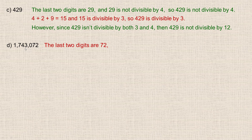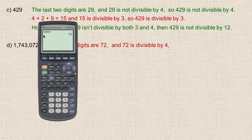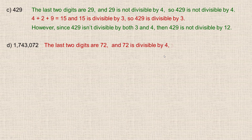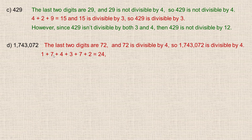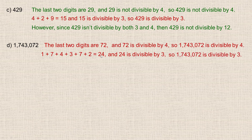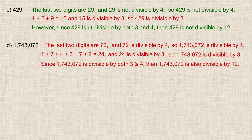Let's do one more larger example: 1,743,072. The last two digits are 72, and 72 is divisible by 4 — 18 times 4 is 72. So 1,743,072 is divisible by 4. Now let's check for 3 by adding the digits: 1 plus 7 plus 4 plus 3 plus 0 plus 7 plus 2. So 1 and 7 is 8, and 4 more makes 12, and 10 more is 22, and 2 more makes 24. And 24 is divisible by 3. So 1,743,072 is divisible by both 3 and 4, and therefore divisible by 12.